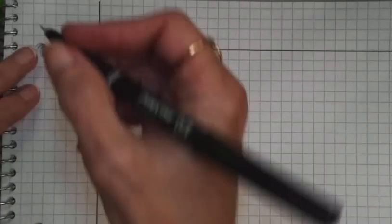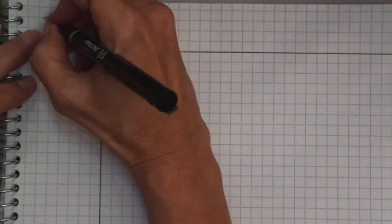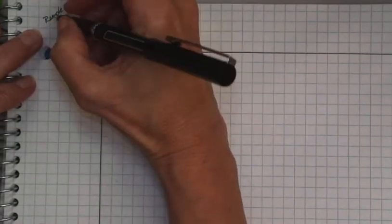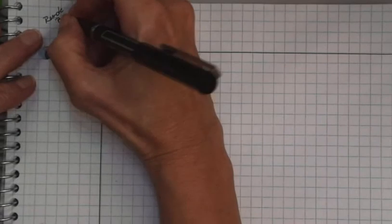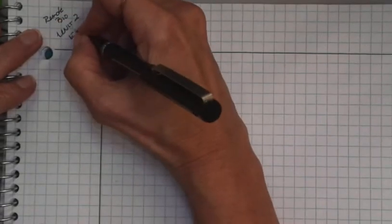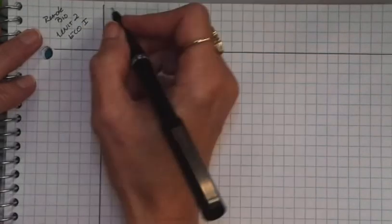All right, so this is our next ECO1 set of notes. This is B12C, and you need to take a minute to set up your page. This is remote bio, or this is the makeup work if you missed a day. We're in unit 2. This is ecology 1. And what we're doing today is we're doing B12C.